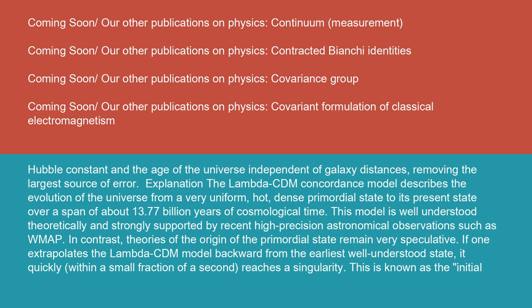Explanation: The Lambda-CDM Concordance Model describes the evolution of the universe from a very uniform, hot, dense primordial state to its present state over a span of about 13.77 billion years of cosmological time. This model is well understood theoretically and strongly supported by recent high-precision astronomical observations, such as WMAP. In contrast, theories of the origin of the primordial state remain very speculative.